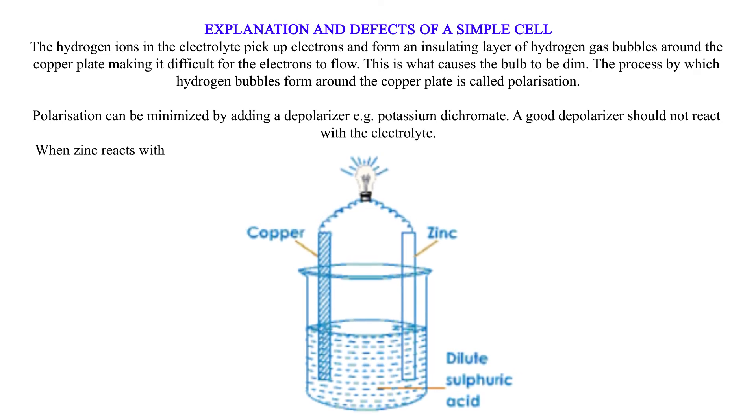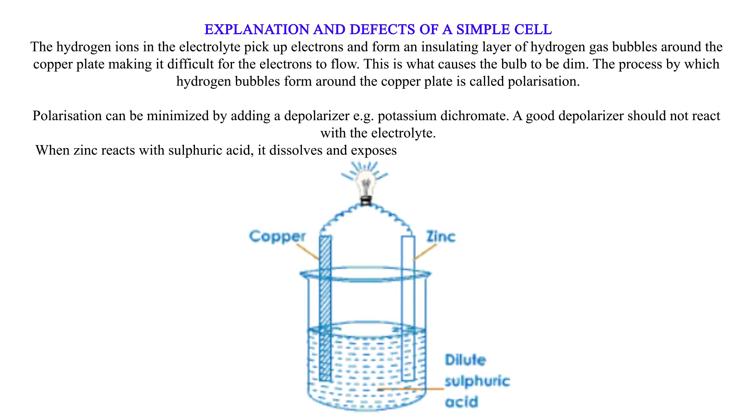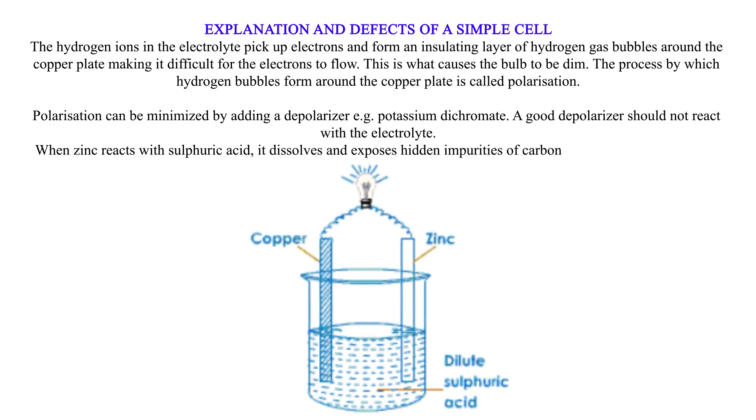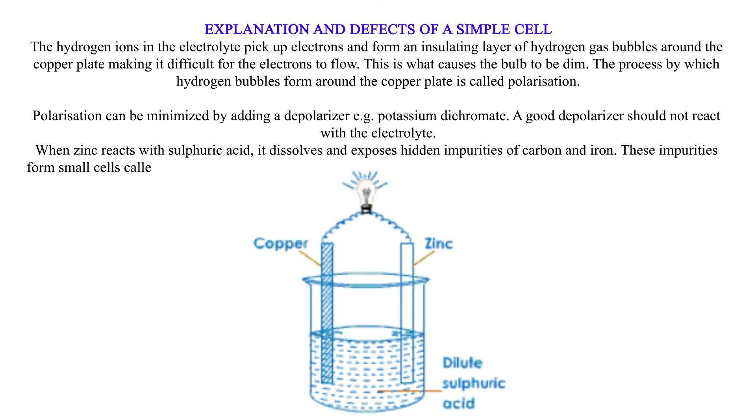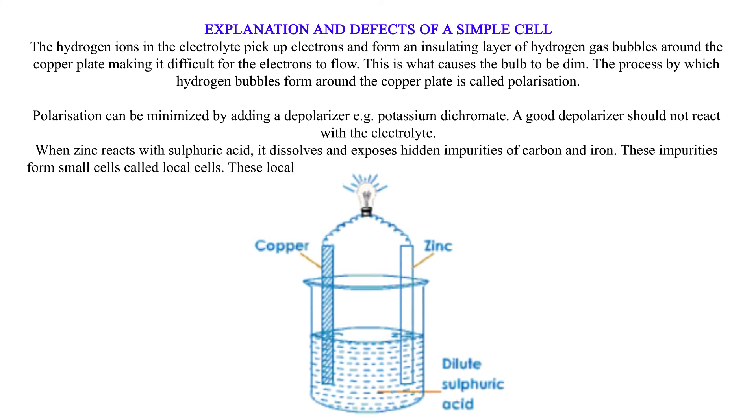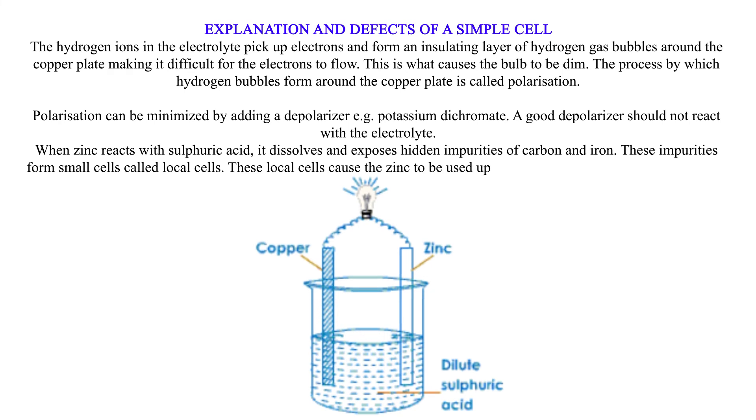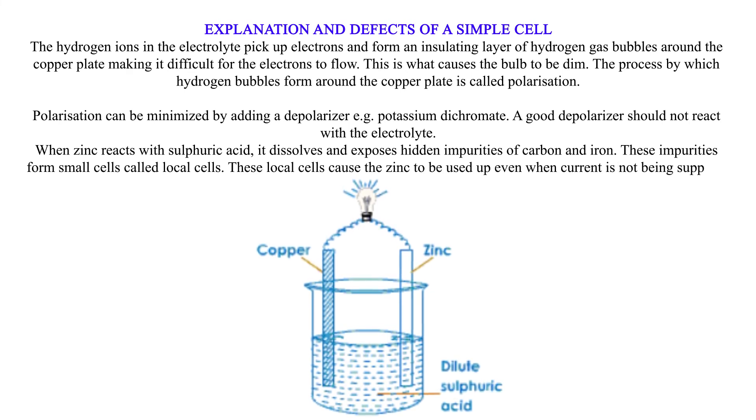When zinc reacts with sulfuric acid, it dissolves and exposes hidden impurities of carbon and iron. These impurities form small cells called local cells. These local cells cause the zinc to be used up even when current is not being supplied.